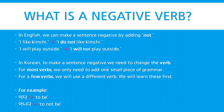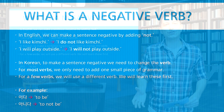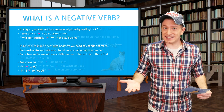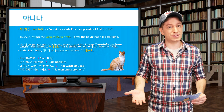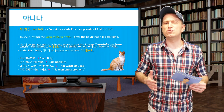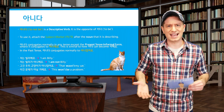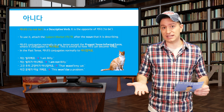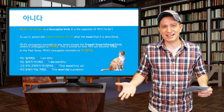For example, 이다, 'to be', can become 'to not be': 아니다. So let's first talk about 아니다. 아니다 is a descriptive verb that means 'to not be', and it's the opposite of 이다, meaning 'to be.'